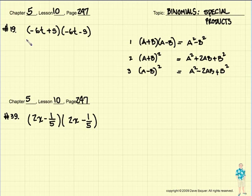Let's take a look at number 19, and in number 19 we notice that we have an A term, we have an A term, we have a B term, we have a B term, and we're having one with a plus and one with a minus.